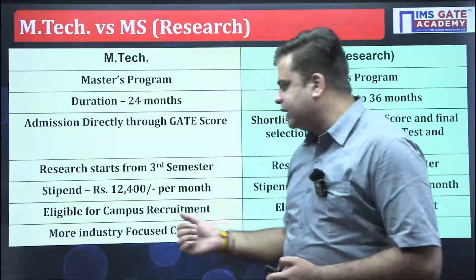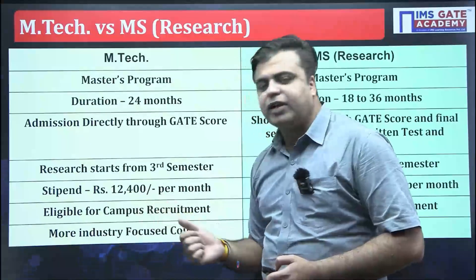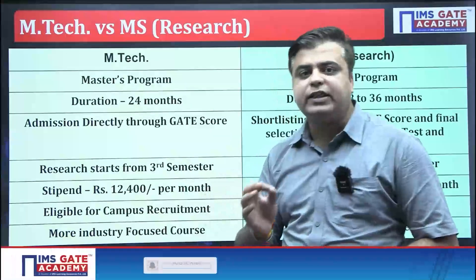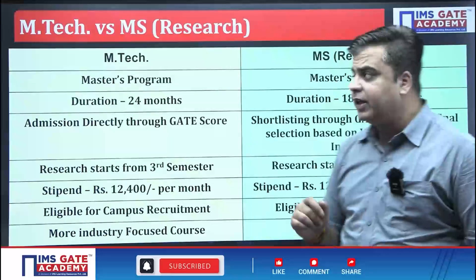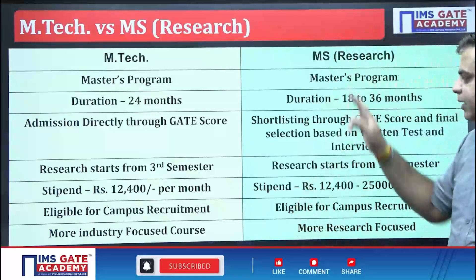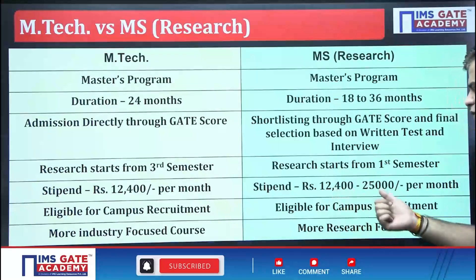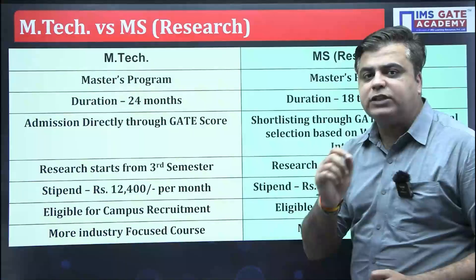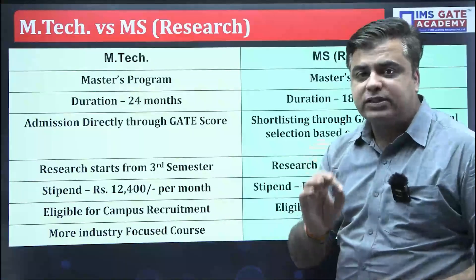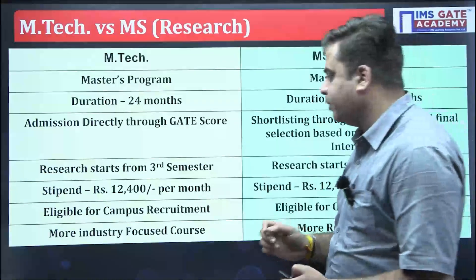The stipend offered in the M.Tech program is 12,400 rupees per month, whereas in the MS program it varies from 12,400 to 25,000 rupees per month based on the type of project you are working on.